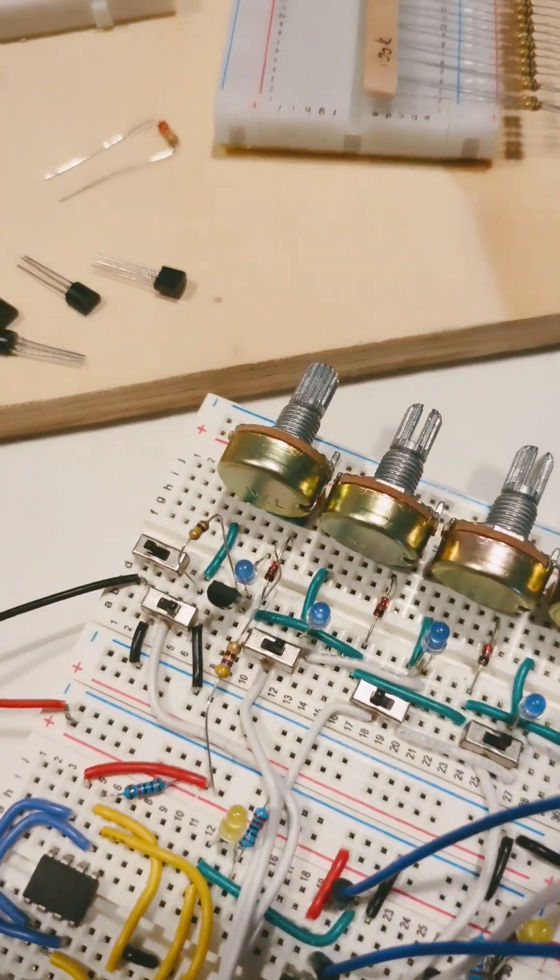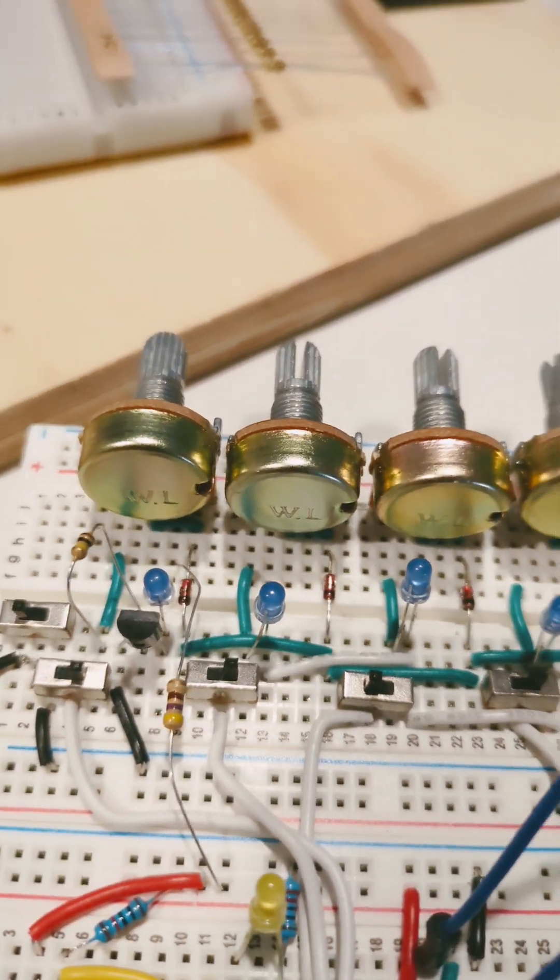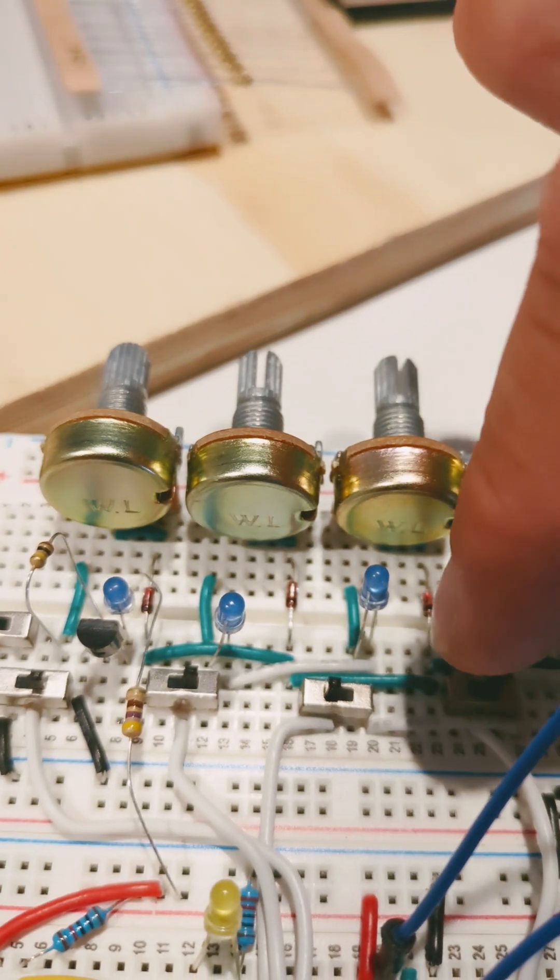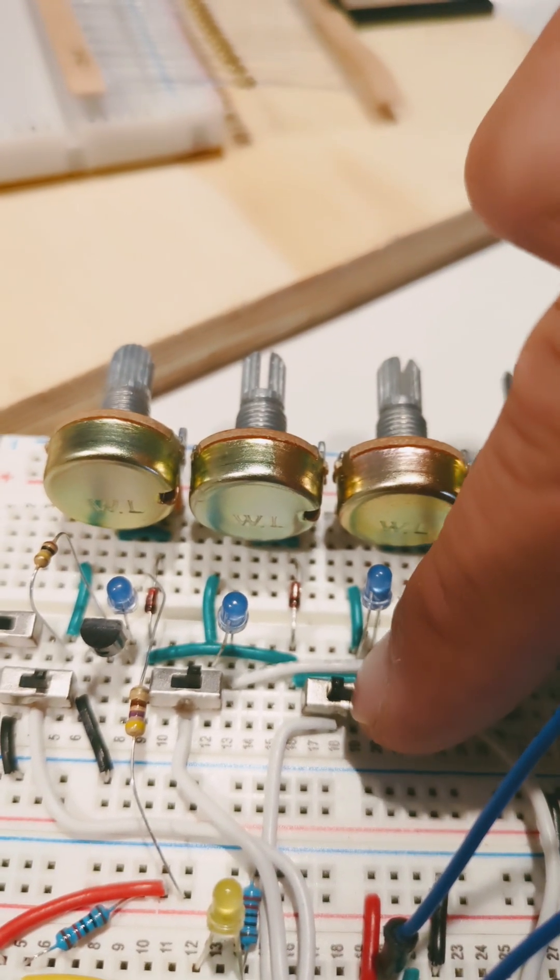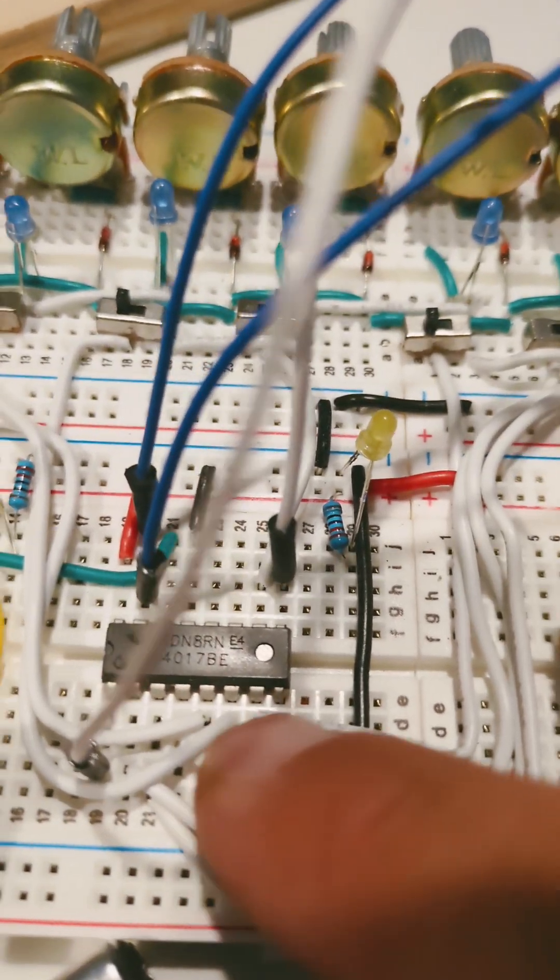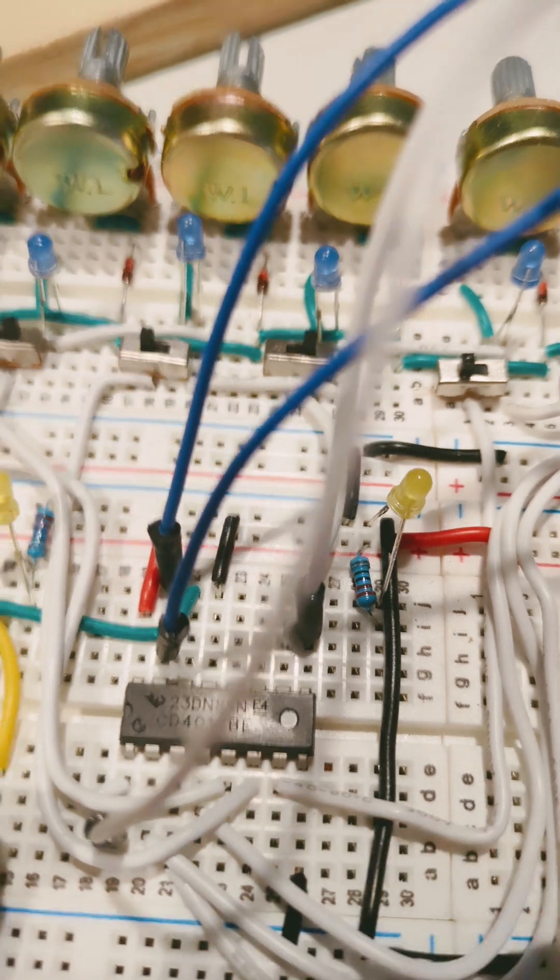The next improvement I'm going to make is to how the LEDs are driven. You can see these two here are connected directly through this switch that controls whether or not the step is on, so they're essentially being run directly from the 4017 decade counter chip. I've heard that's kind of hard on that chip to drive these LEDs like that.